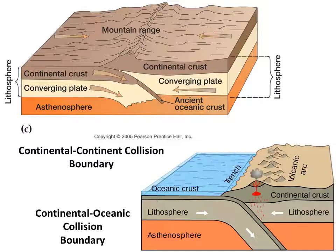However, when plates of different densities collide, the heavier plate will sink or subduct underneath the lighter plate, eventually turning the heavier plate back into magma. Oceanic crust is very dense or heavy, so it will sink underneath the lighter continental crust. As it sinks and the plate is melted, magma chambers are created, which produce volcanic mountain ranges as the buoyant magma tries to reach the surface.